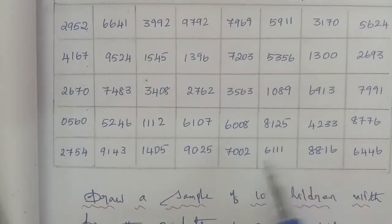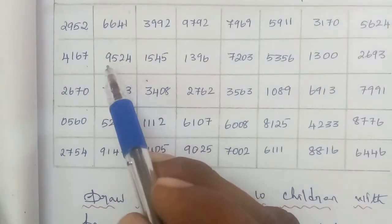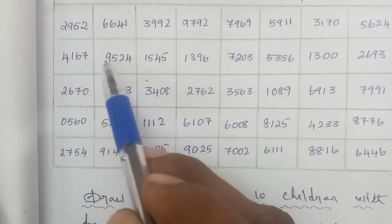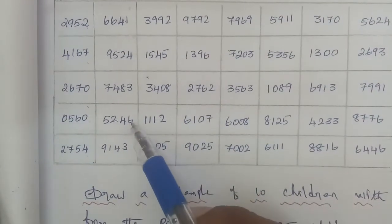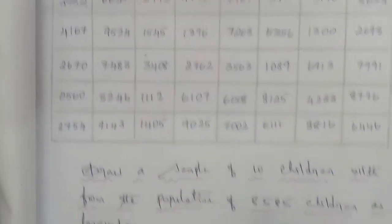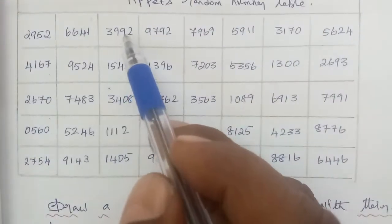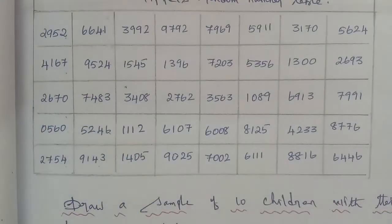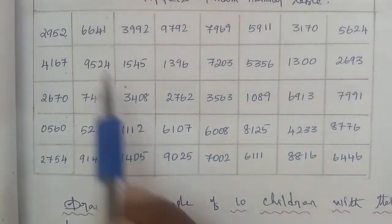Continuing with the 10 samples: 2641 is selected. Then 7483 is selected. The number 1545 is selected. So we now have 10 numbers selected from the random number table, all within the range of 8585. We select 10 numbers total using the column and row of the table.